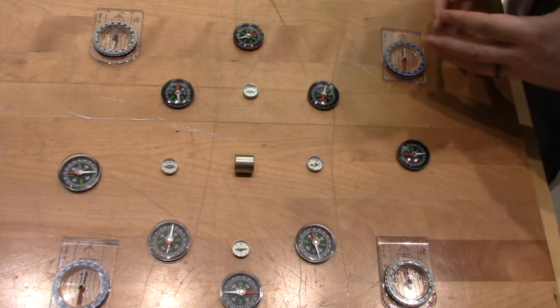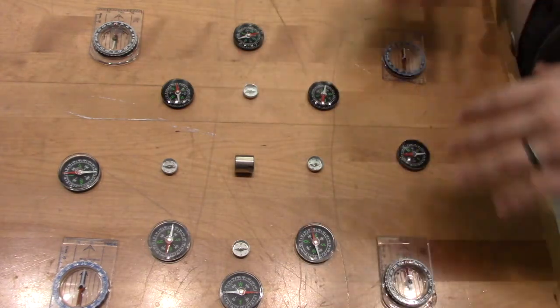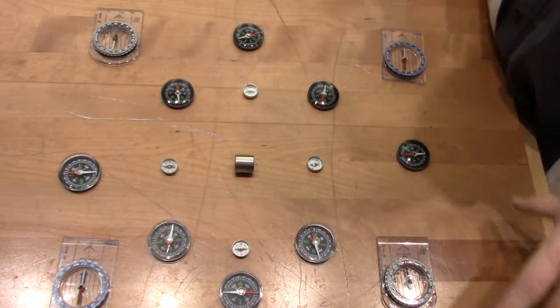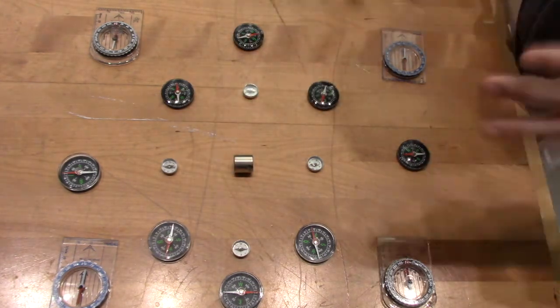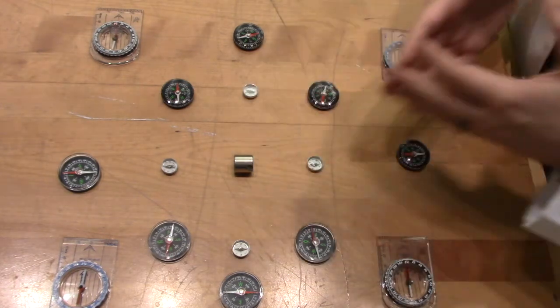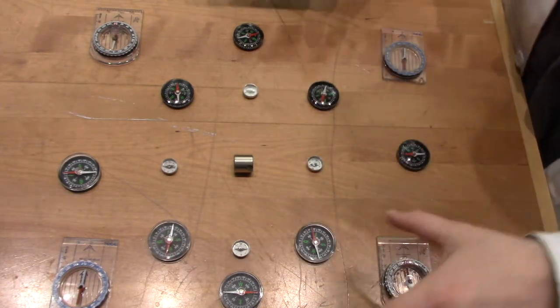The reason this permanent magnet doesn't respond to the compasses is because the magnetic field from each of these compasses is incredibly small, and compared to that, the weight of this magnet is comparably large, so the magnet does not visibly react to the magnetic field from the compasses.